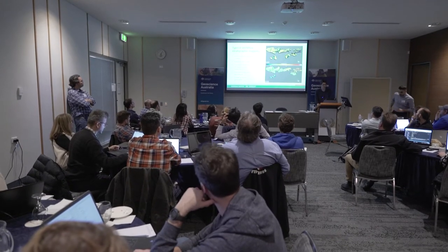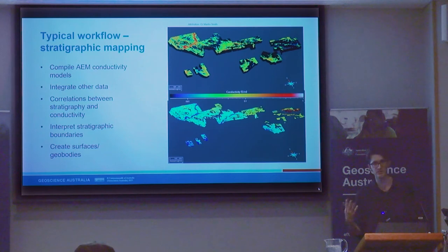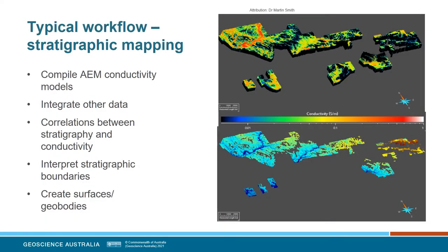So a typical workflow for stratigraphic mapping — I'm not going to cover mineral exploration, which I haven't been as experienced in. But what we might do is compile the AEM conductivity models, integrate with whatever other data we think is useful, bring it into a 3D package, look at where we have good borehole information or outcrop, and try to build correlations so we understand what the AEM is telling us. Once we feel we have a good handle on that, we might start interpreting the boundaries of some of these units, and eventually use gridding or 3D modelling to create surfaces or geobodies.